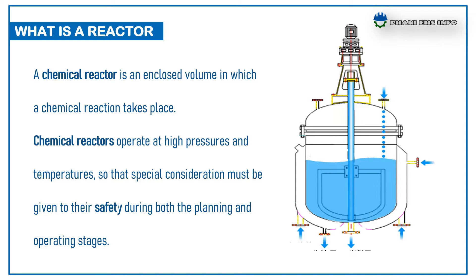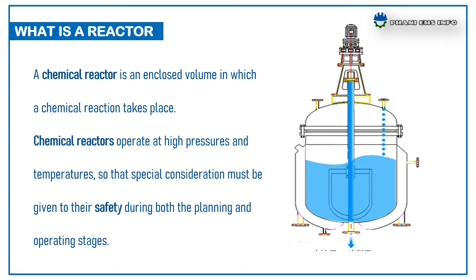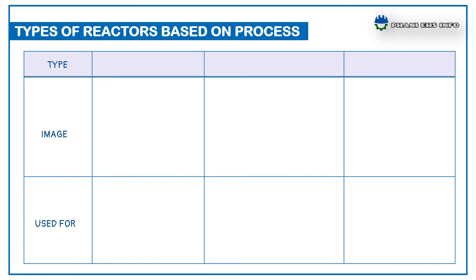Chemical reactors operate at high pressure and temperatures, so special considerations must be given to their safety during both planning and operating stages. There are different types of chemical reactors used in industries, based on process and based on material of construction.